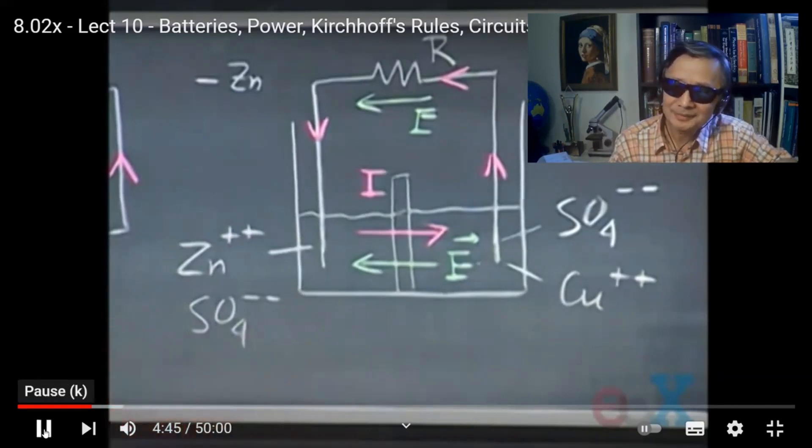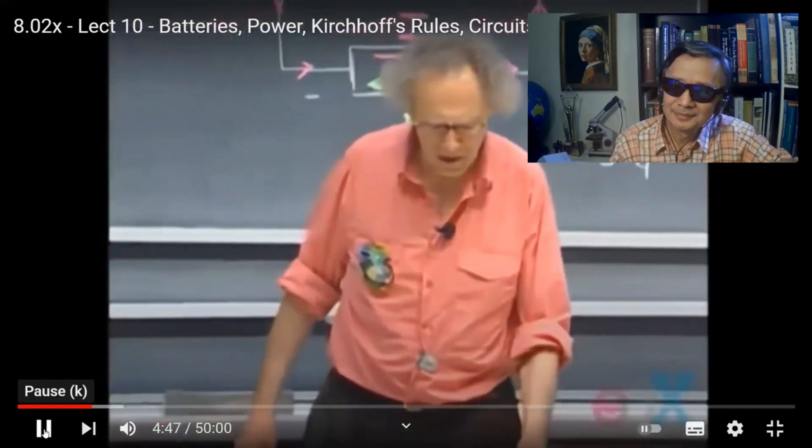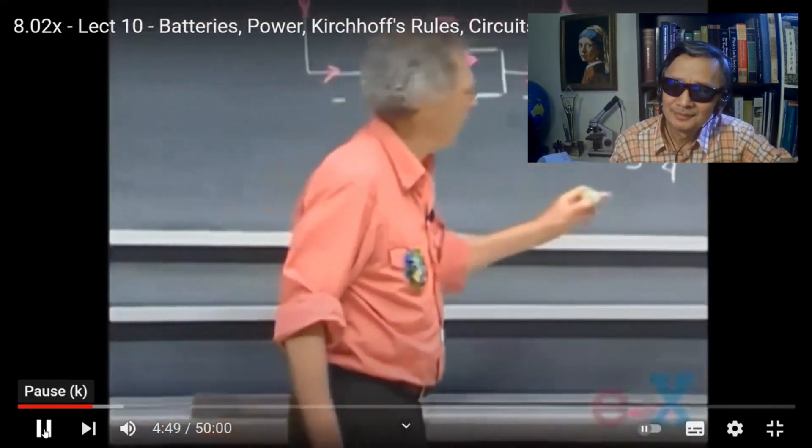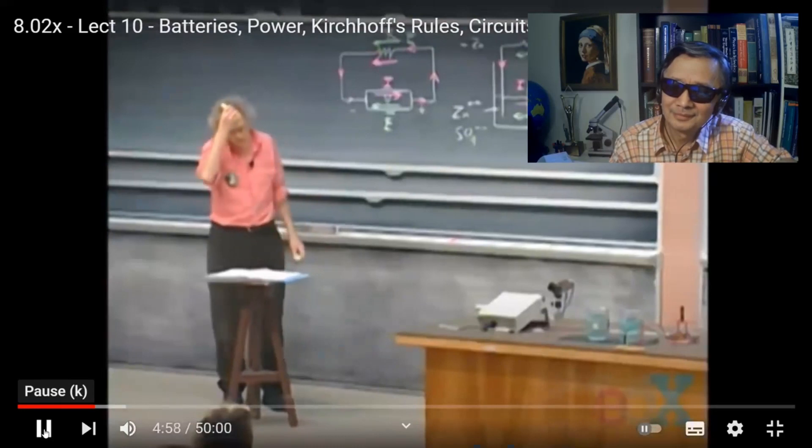to the left. Now, why would SO4 minus ions travel through an electric field that opposes them, that opposes their motion? And they do that because in doing so, they engage in a chemical reaction.